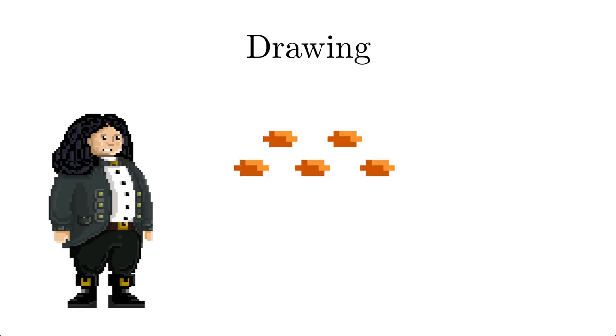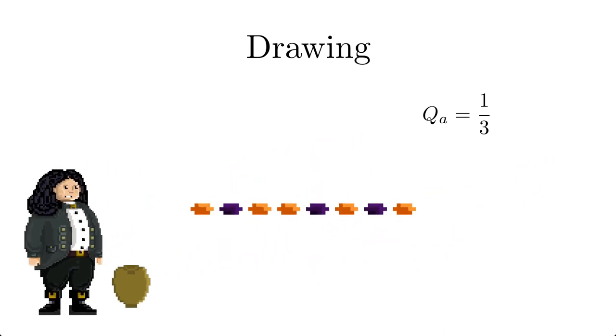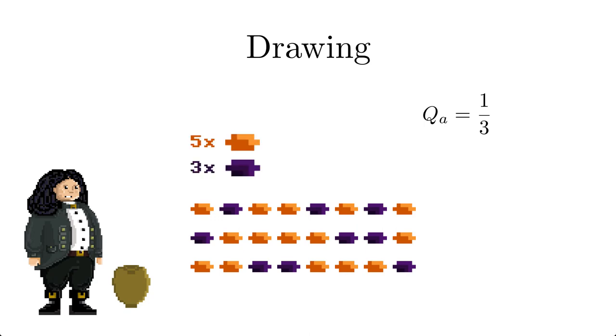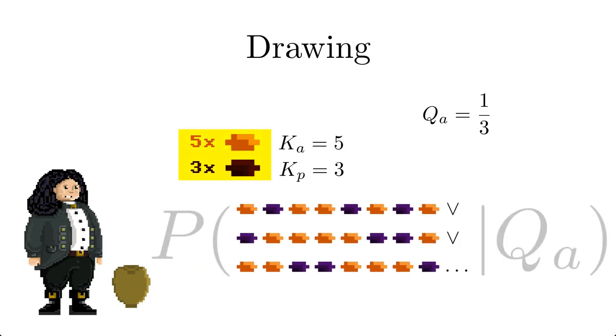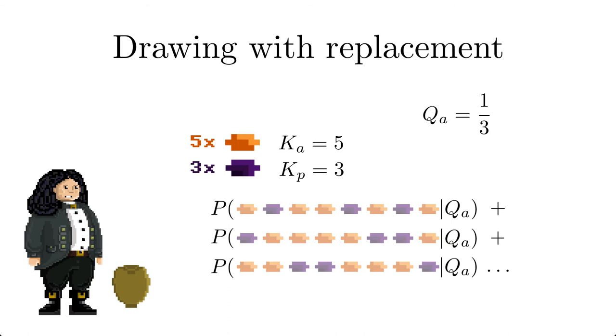Now let's assist Bernoulli with his task to compute the probability to draw five apricots and three plums out of the pot where the probability for an apricot is one third in a single draw. Bernoulli does not care about the order the dried fruits are drawn from the clay pot. Only the total numbers of apricots and plums is important. There are several elementary events that lead to the desired amount of ingredients. Since these events are exclusive, we can apply the simplified sum rule. Recall that Bernoulli made sure that the condition for drawing the second fruit was the same as that for the first one by putting the drawn fruit back into the clay pot.